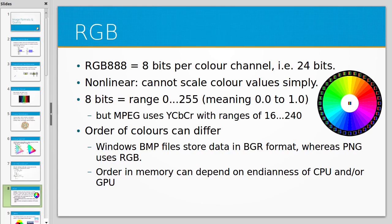I want to talk about RGB now. RGB refers to red, green and blue — it's a three-valued system for representing colour. The most common way you'll see it is in RGB 888, where the 8 means how many bits you've got for each channel. So RGB 888 is 8 bits for each channel, which is 24-bit colour. This is the representation of colour we see most often. You could use more bits, but this one is particularly common.